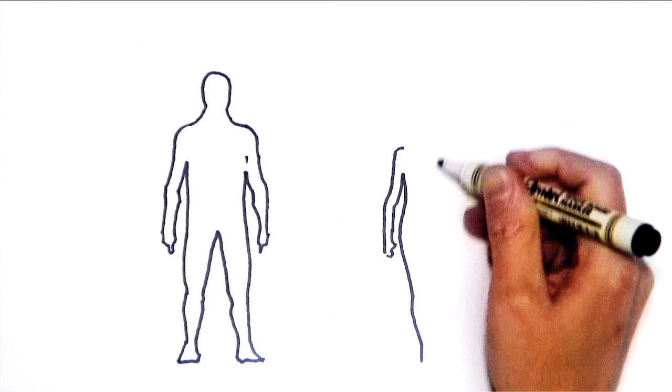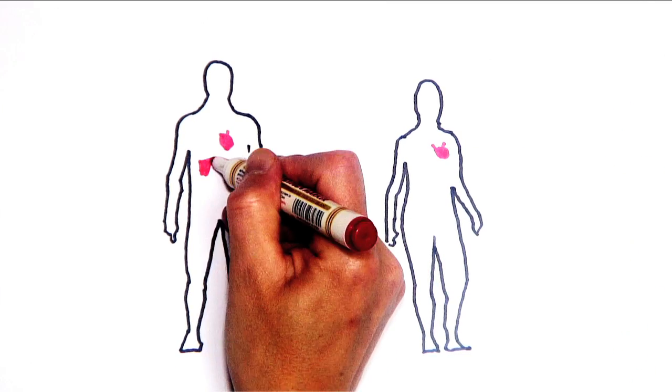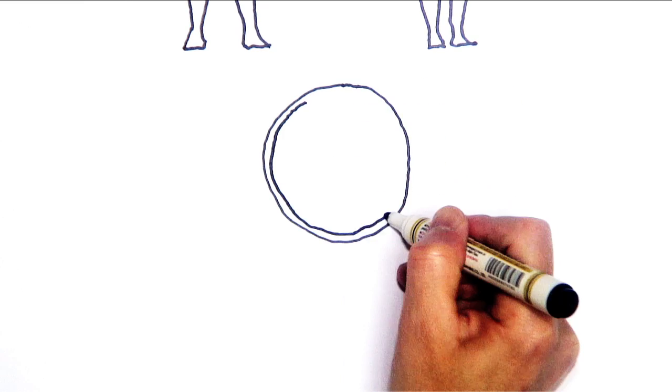Our bodies are made of various tissues and organs, such as the heart and liver, which in turn are made of millions of microscopic cells.